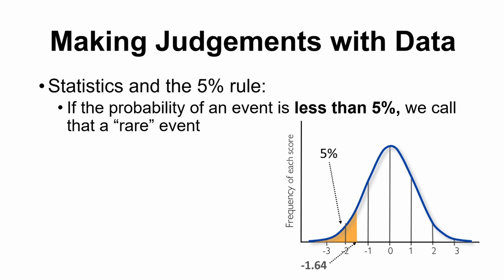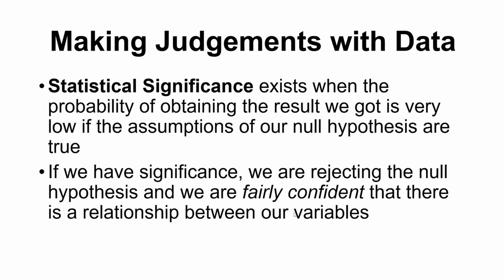That 5% is just an arbitrary cutoff set by scientists. Sometimes if people are very concerned about certain types of errors, they can go with a 1% chance instead. So if you've seen the standard being p = 0.05 for that 5% odds, you might also see p = 0.01 for that 1%. If we use p = 0.01, we are saying that we need to be 99% or more certain that what we've observed is not due to chance — we have to be very confident that what we found is coming from some real relationship in our population. Statistical significance exists when the probability of obtaining a result as extreme as what we got would be very low if the null hypothesis were true.